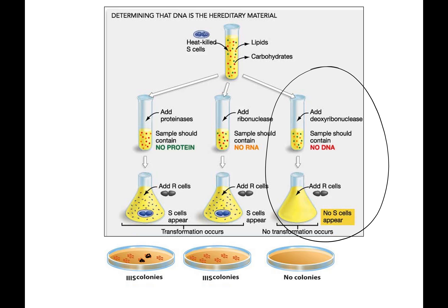The big take-home experiment was when they added a deoxyribonuclease — DNase — which chews up and breaks down DNA. With no DNA present, they added the rough cells and got no smooth bacteria back. No transformation. This told them that the only way transformation could happen was with DNA.